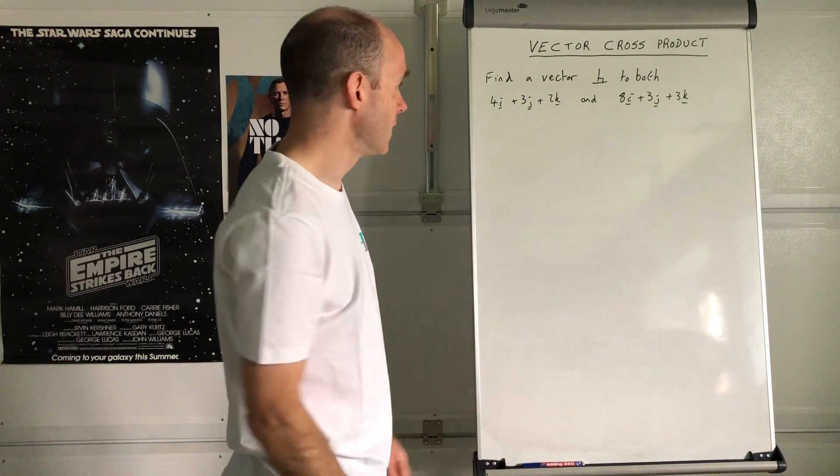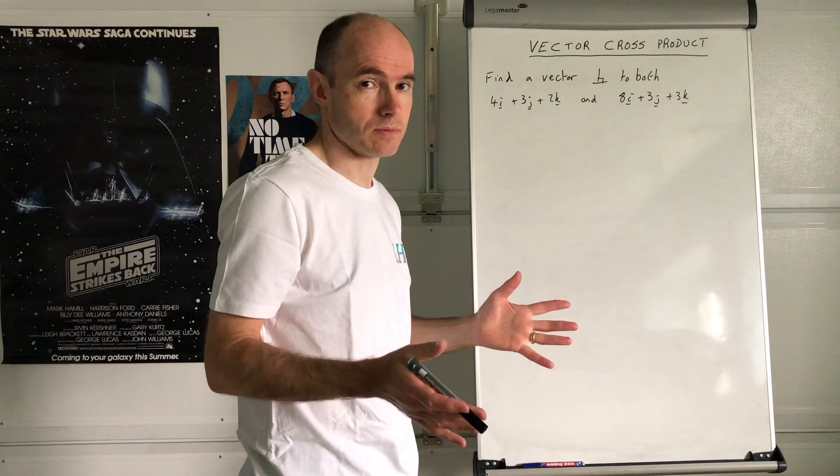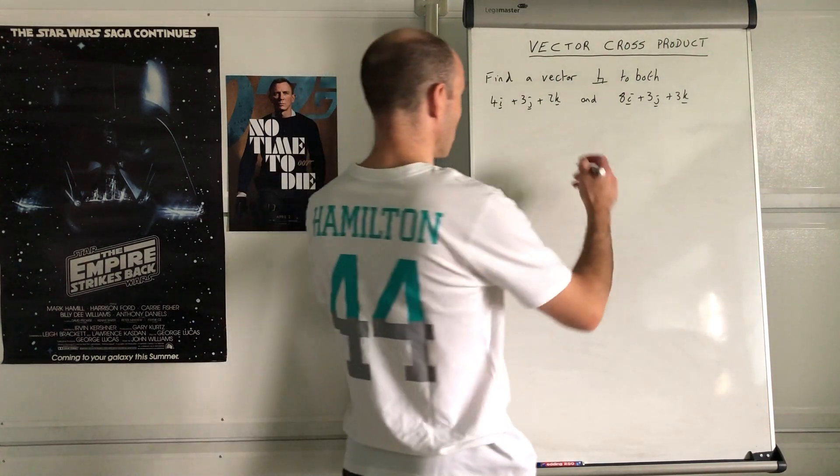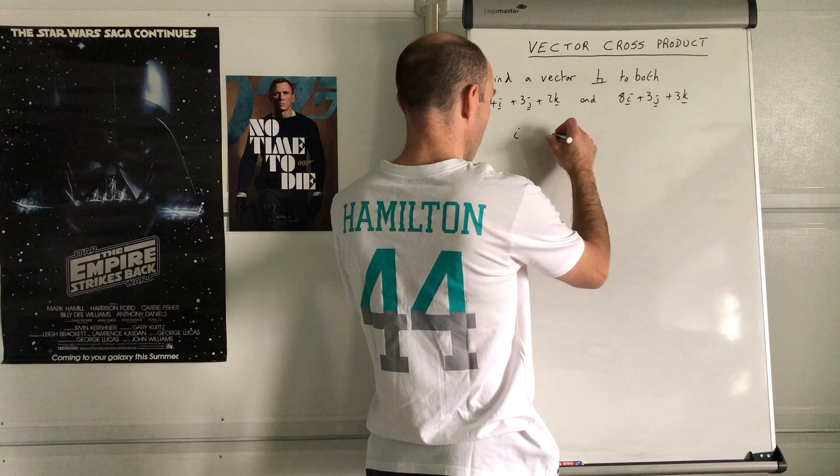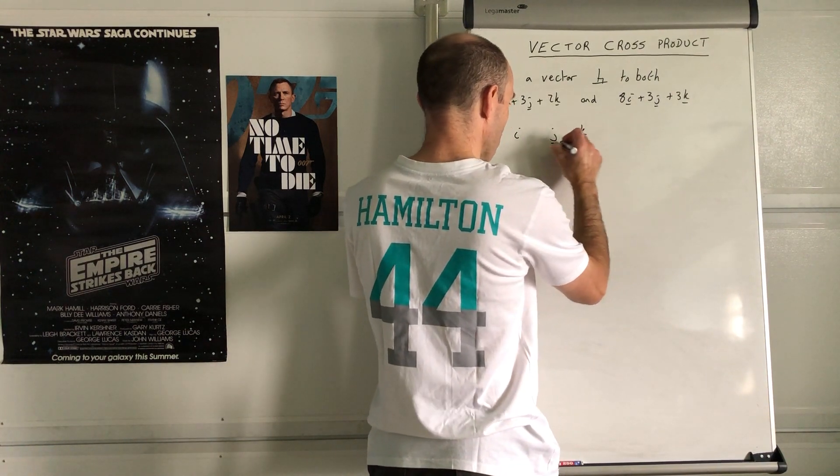The first thing you do is write out what we call the determinant. The i, j, k is always the top row.